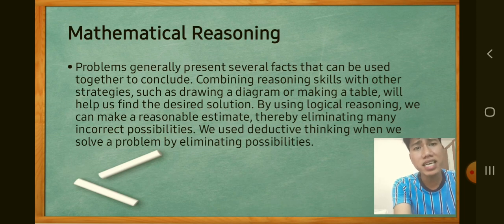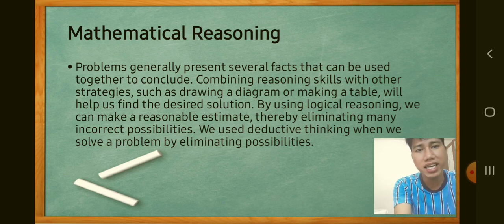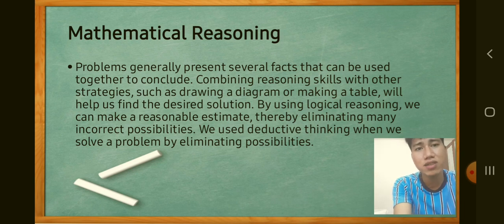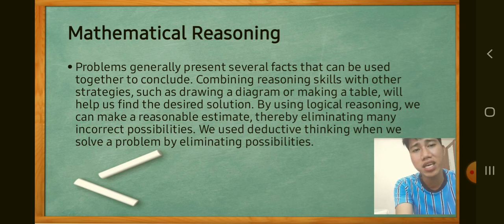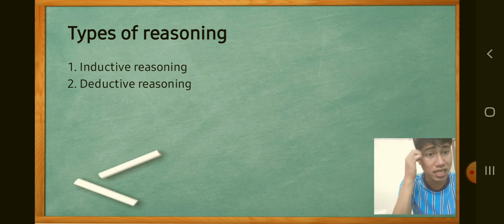Mathematical reasoning: problems generally present several facts that can be used together to reach a conclusion. Combining reasoning skills with other strategies such as drawing a diagram or making a table helps find the desired solution. Using logical reasoning, we can make reasonable estimates and eliminate incorrect possibilities. There are two types of mathematical reasoning: inductive reasoning and deductive reasoning.